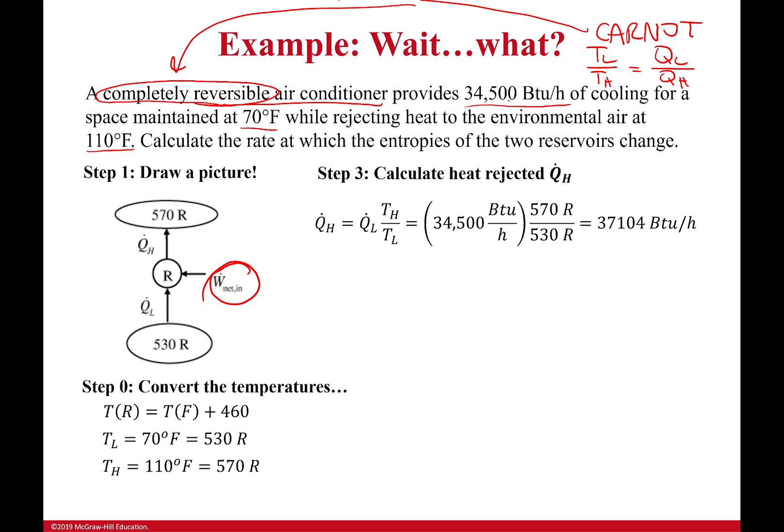So let's find the heat being input to the environment. Now, like I said earlier, because this is a Carnot cycle, because it's completely reversible, the ratio of my temperatures is the same as the ratio of my heats. I can use that to solve for this. So I get that the heat being rejected to the outside is 37,104 BTUs per hour. If I were to take the difference between these two, I could actually figure out how much work it took to run this air conditioner - so it would be 2,604 BTUs per hour. Is that good or not? I don't know. It's completely reversible, so that's pretty amazing. It's the minimum it could be. I would say yes, it probably is pretty amazing.